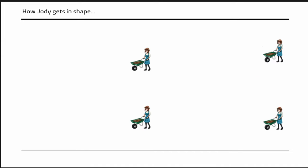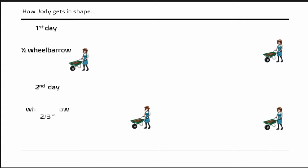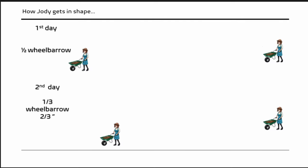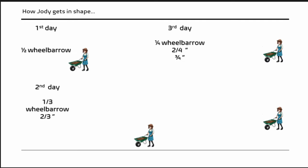So how did Jodi get in shape? On the first day she moved half a wheelbarrow. On the second day she moved a third of a wheelbarrow, then two-thirds — back and forth. On the third day she moved a fourth of a wheelbarrow, two-fourths, and three-fourths — back, back, and forth.